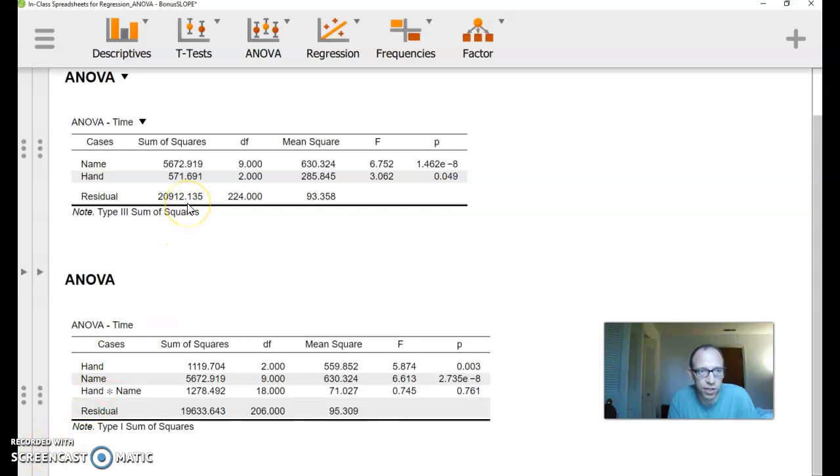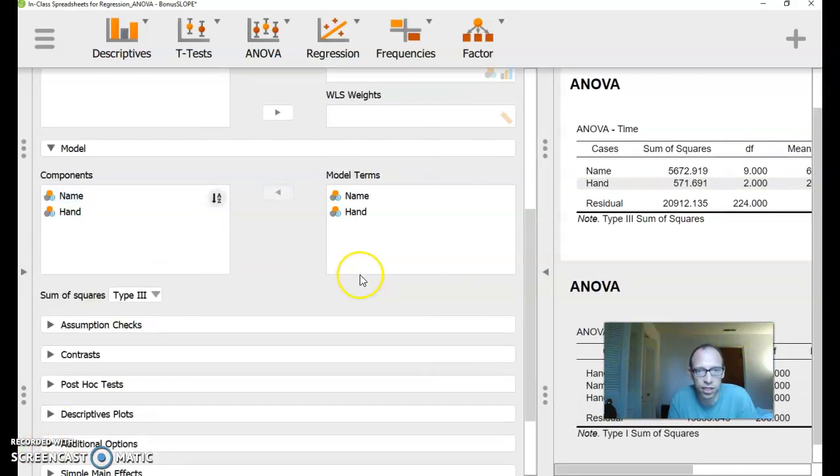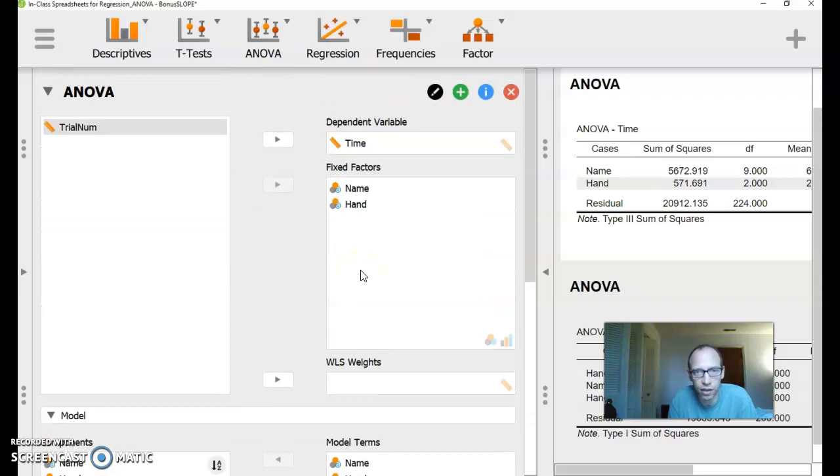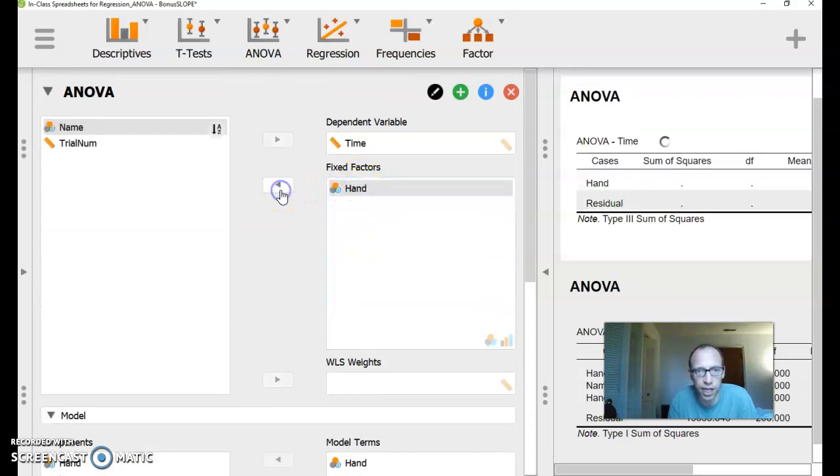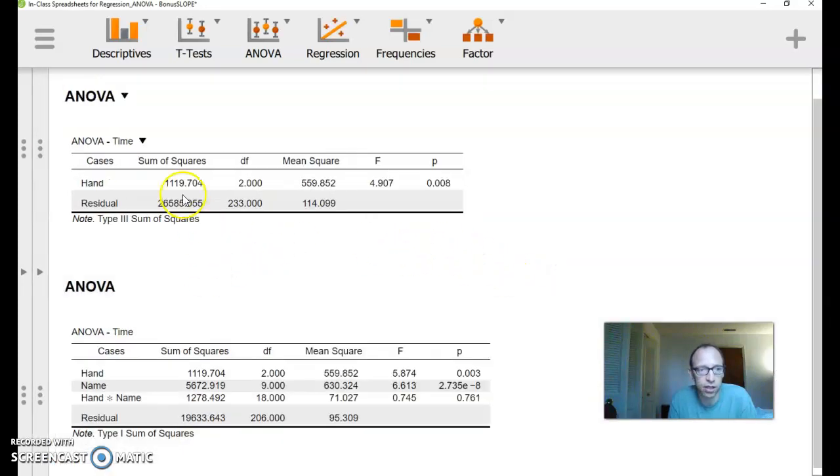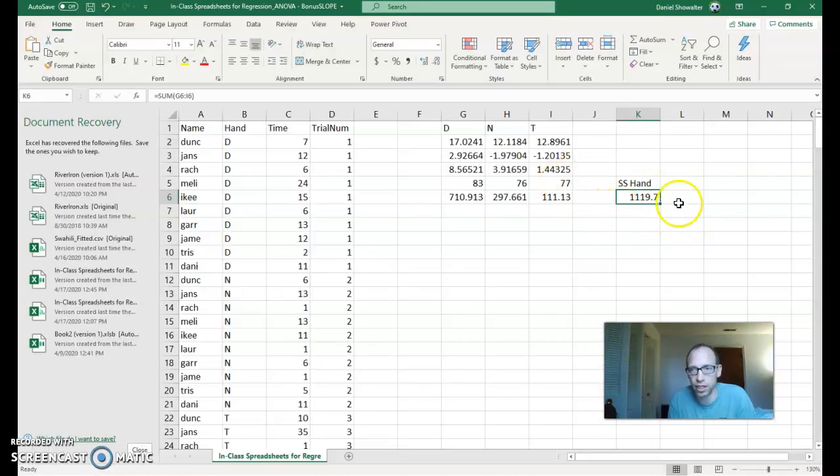So this, even though it doesn't have the interaction term here, if we were to put in hand first, notice even just with one factor there, we get that 1119.704 that we calculated in the spreadsheet here. So all is well, again, in the world. And now we just need to learn a little bit more about those three varieties of sums of squares.